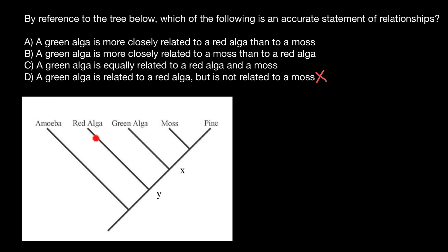The length of these branches is directly correlated with time. For example, this fragment is twice shorter than this fragment. This fragment is much shorter than this fragment — I would say about twice shorter than this line. The most recent common ancestor of red alga and green alga is going to be at this point, and this line which joins red alga and green alga directly correlates with the time that has passed since the most recent common ancestor, which is specified here with the letter Y.